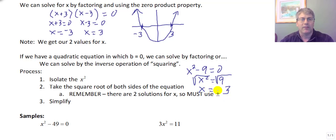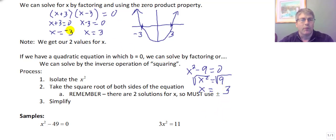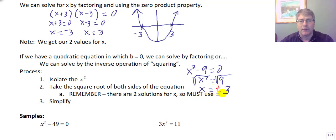But you have to remember we get two different solutions. Our temptation is to say x equals three, which is true, but that's only half the answer. Notice that when we factored we got x equals negative three and positive three. So really our answer should be x equals plus or minus three. We must use the plus or minus when we take the square root of both sides.